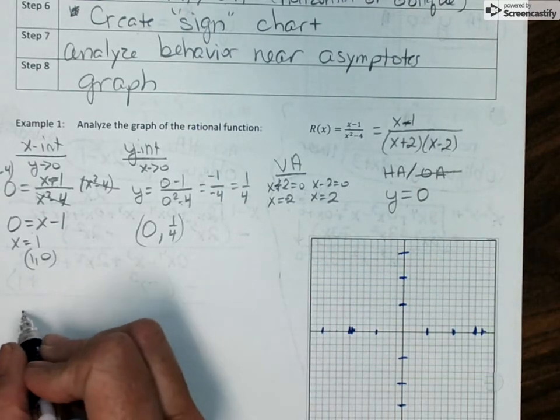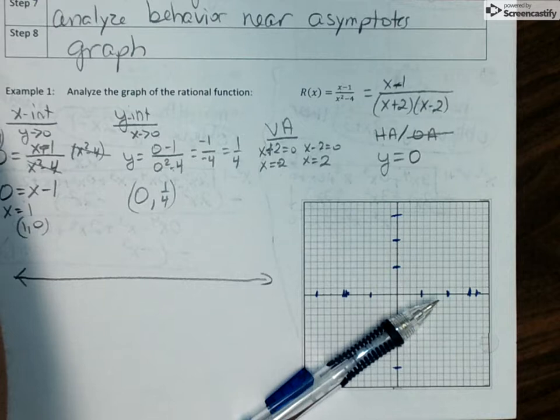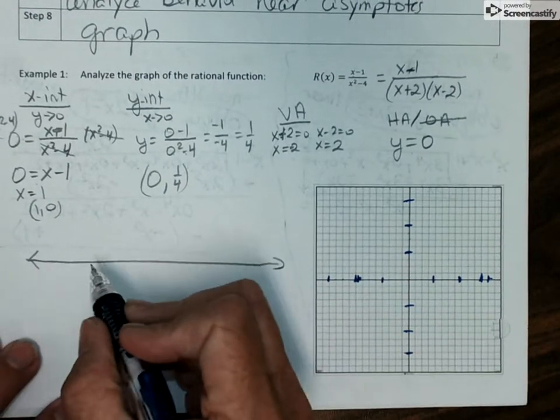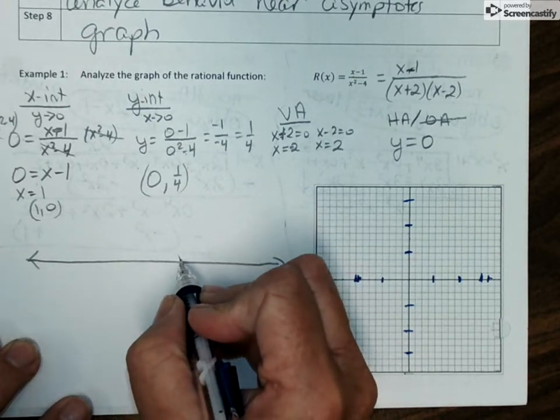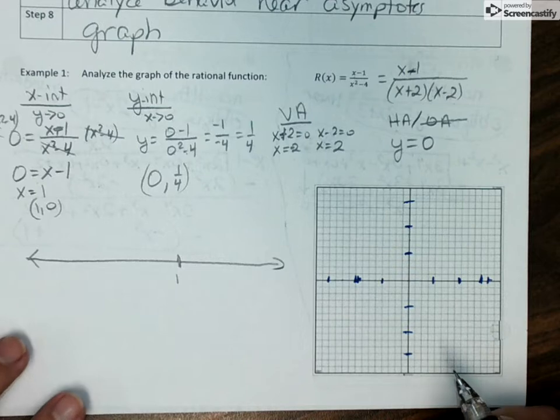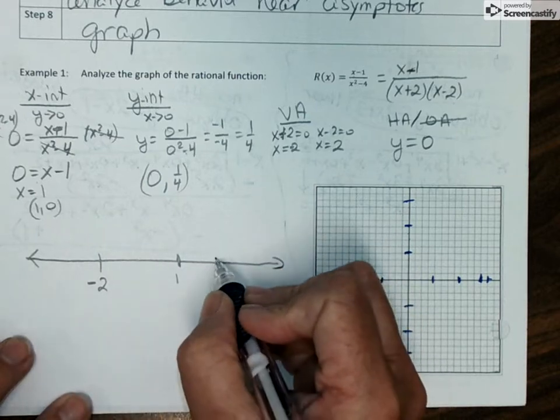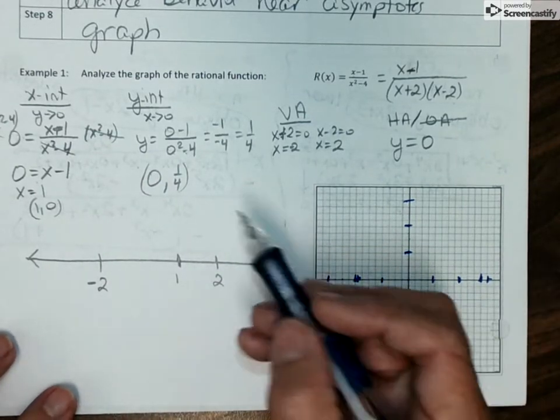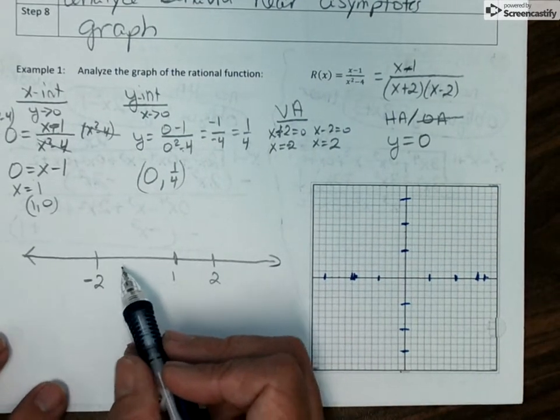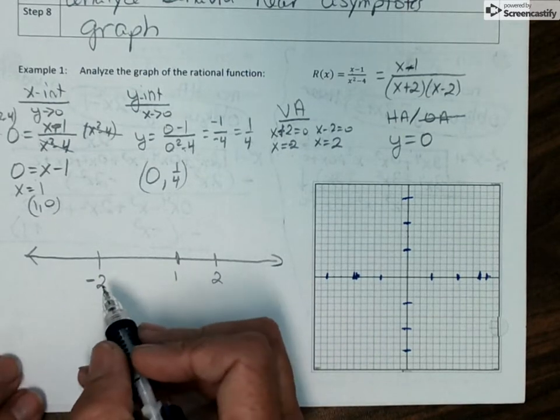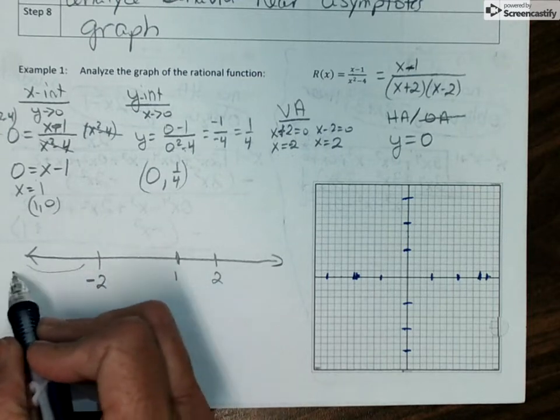For my sign chart, the things that we need to put on this number line, we need to put our x-intercept. So I'm just going to call that location 1. I also need to put both my vertical asymptotes. So I've got a vertical asymptote at negative 2 and positive 2. We don't put on our y-intercepts, and we don't put the horizontal asymptote. So it's only the vertical asymptotes and x-intercepts go on here.